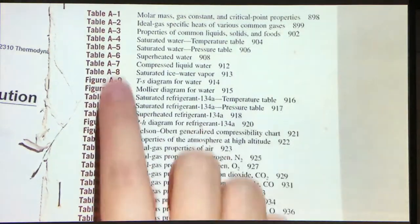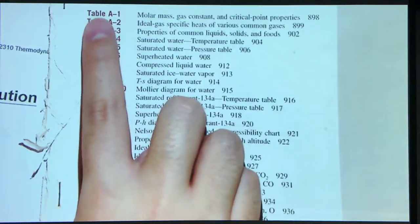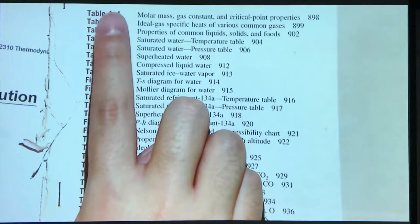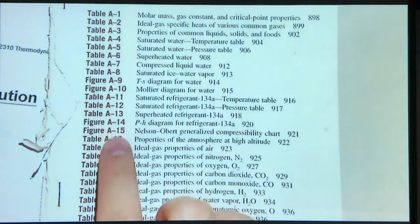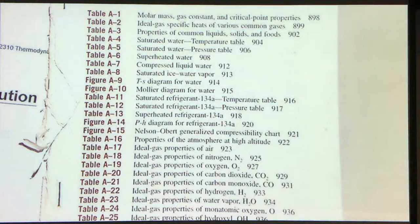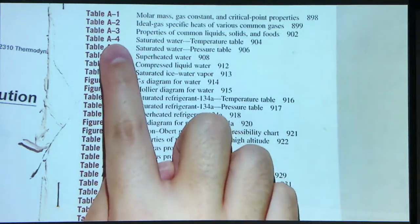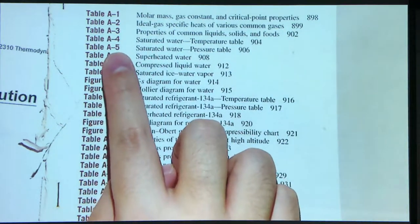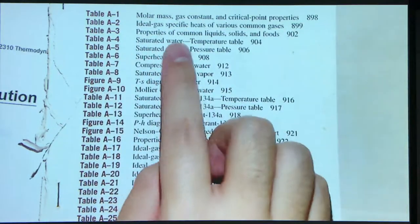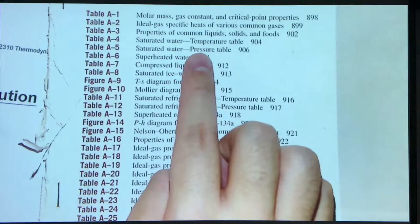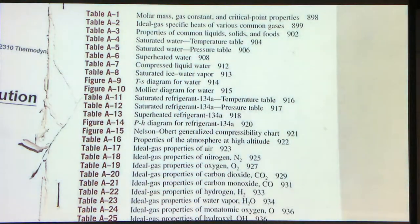Because we are finding the properties of saturated water, we should focus on Table A4 and A5. Table A4 is the temperature table and Table A5 is the pressure table. The temperature table means: if you have a given temperature, then you look at Table A4. If you have a given pressure, then you look at Table A5.